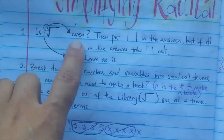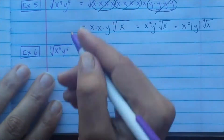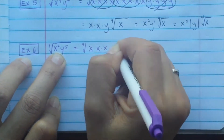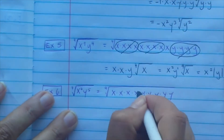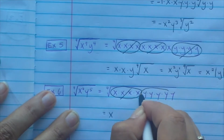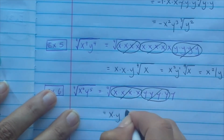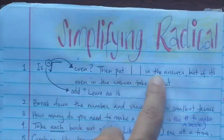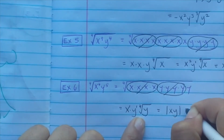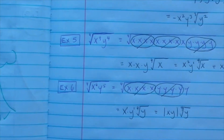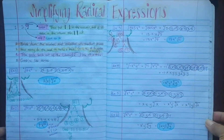Example 6: the 4th root of x^4 y^5. Is n even? Yes — so absolute value in the answer unless it's already even outside. Break it down: 4 x's and 5 y's. Books of 4: circle four x's — x outside; circle four y's — y outside. What's left inside? Just one y. So we have x times y times the 4th root of y. Both x and y outside are to the power of 1, which is odd, so we need absolute value for both. That's it — now let's practice.